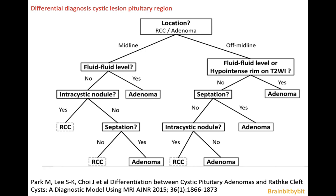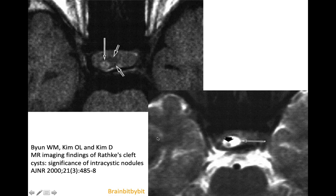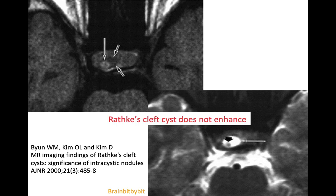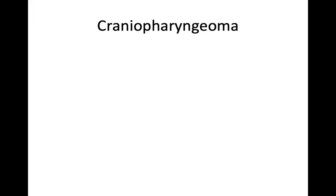The top differential diagnosis of a Rathke's cleft cyst is a cystic adenoma. As shown in this flowchart, an intracystic nodule is very indicative of a Rathke's cleft cyst — this nodule is probably epithelium that has been shed off, so it's debris, and it should not enhance. If you have an enhancing lesion in the pituitary region, you can think of a craniopharyngioma, which some authors consider a continuum with Rathke's cleft cyst, and we're going to talk about that in the next Brain Bit by Bit.